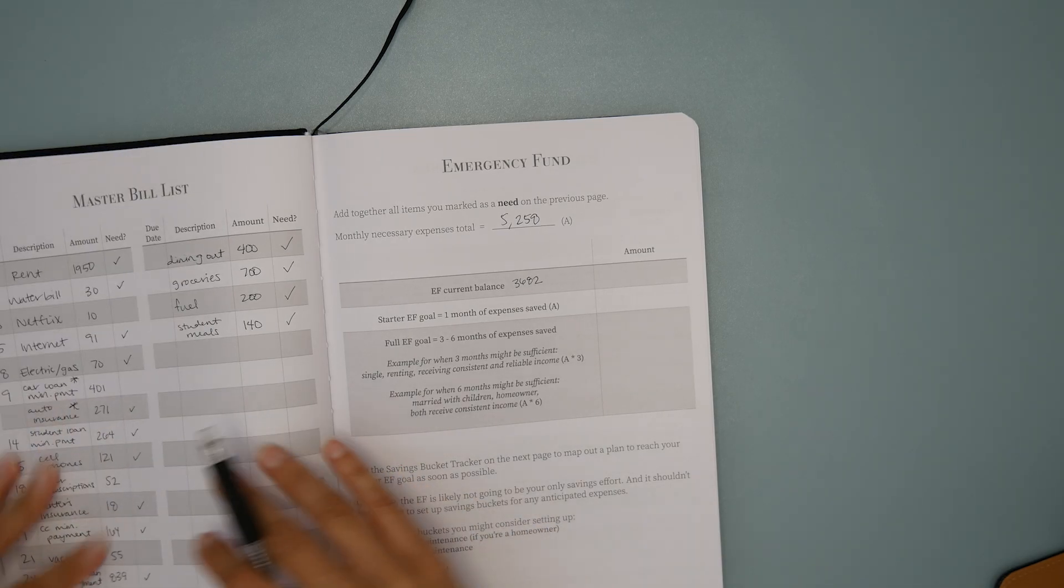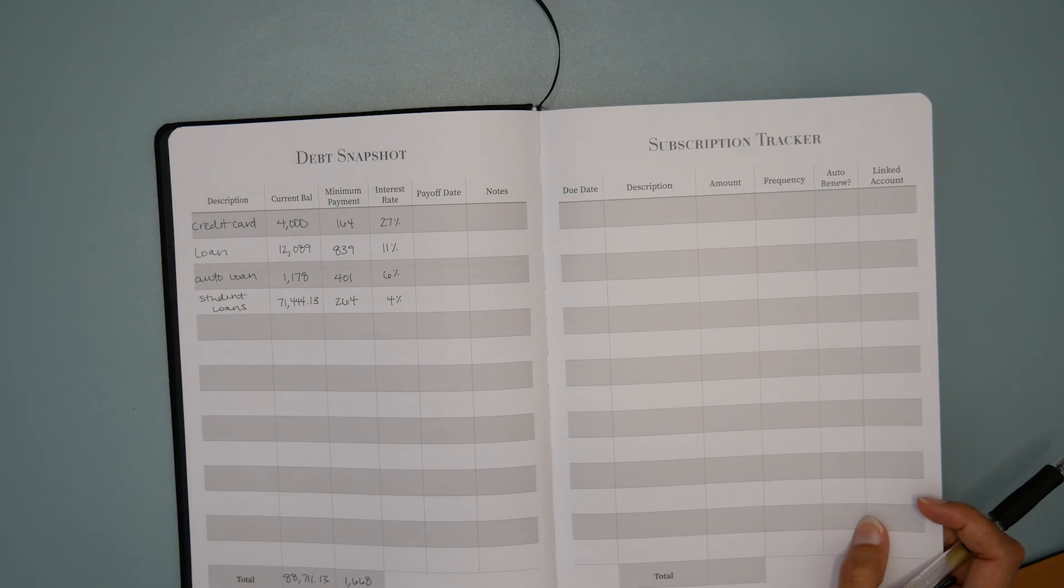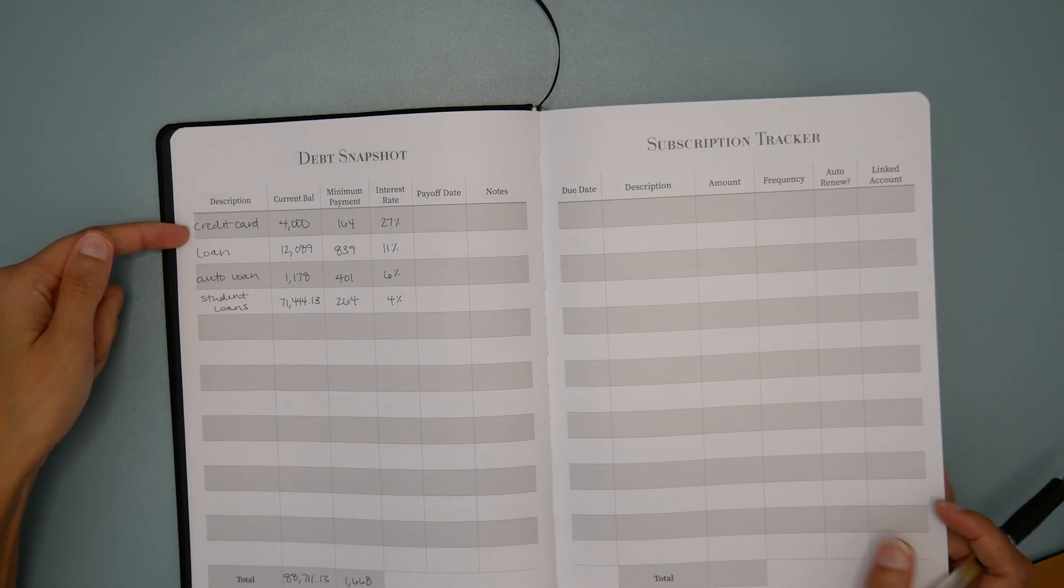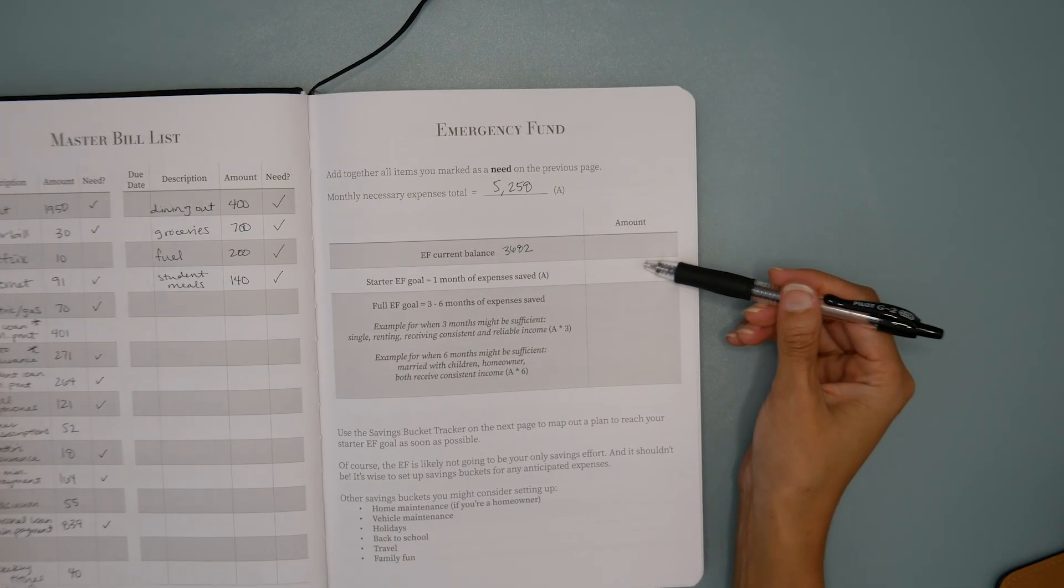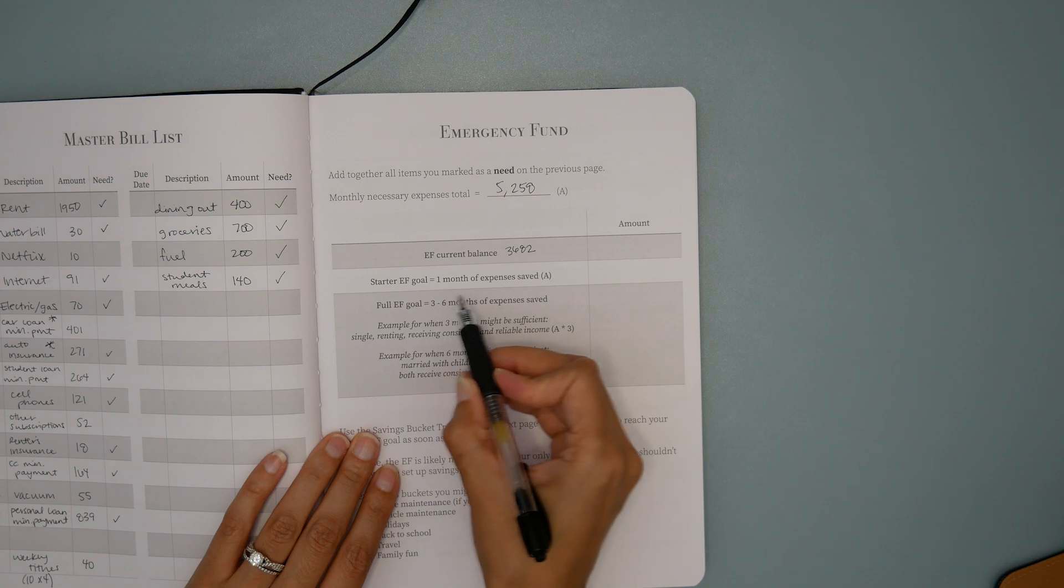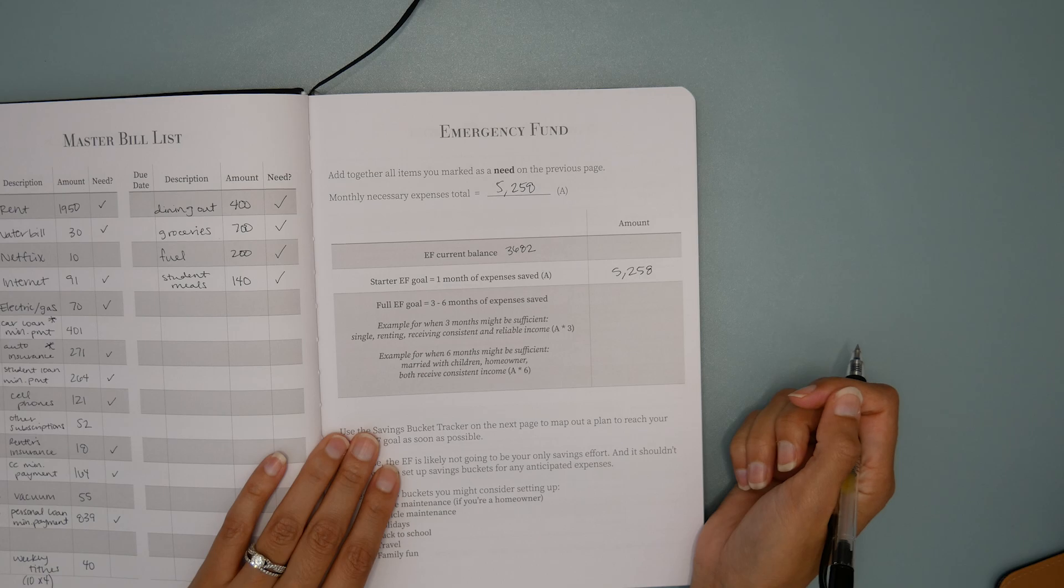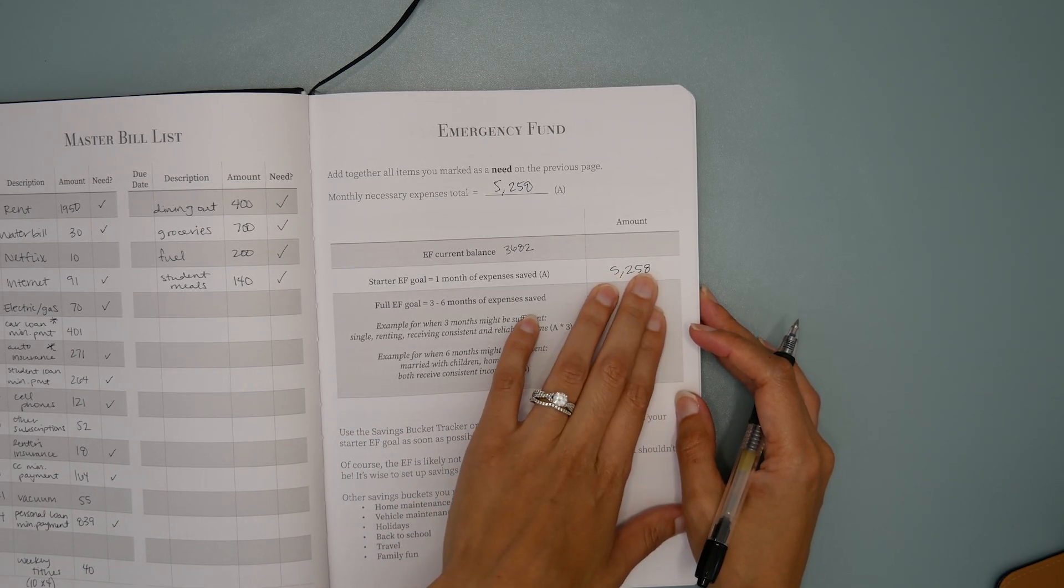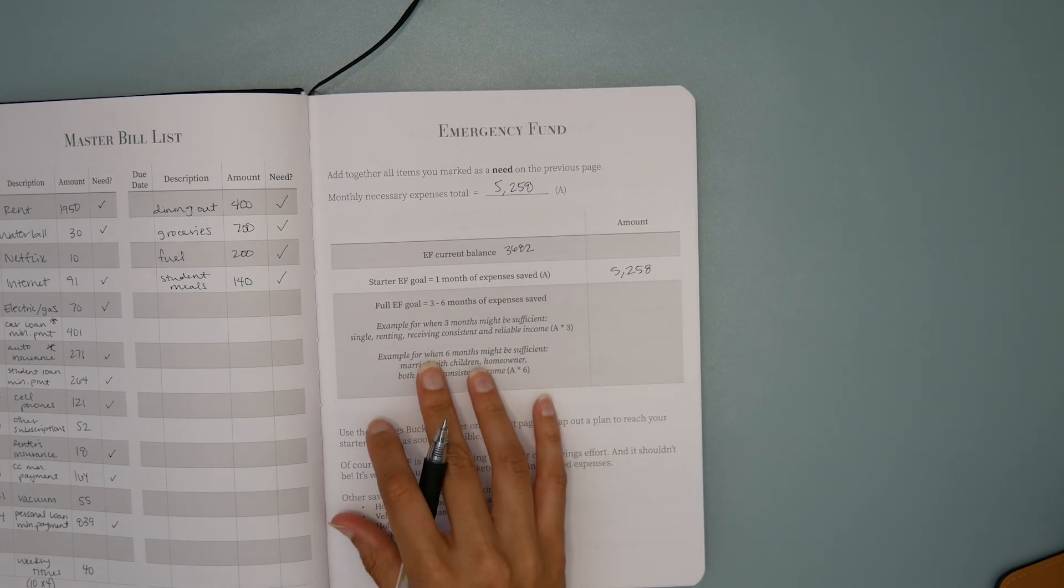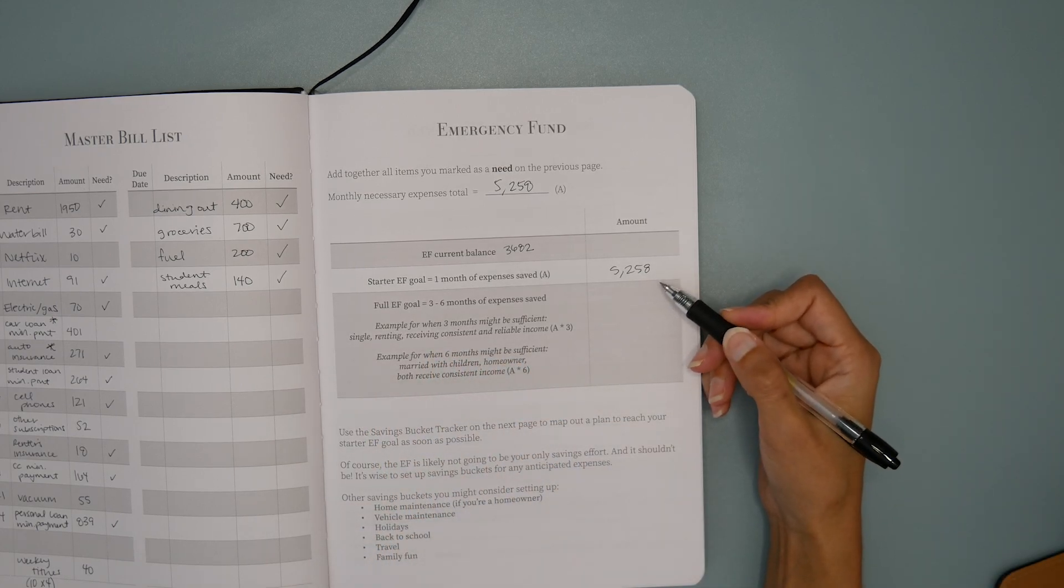My wheels are already turning, thinking about her debt snapshot, and how a plan that we at least want to consider is taking some of that savings and going ahead and paying it towards some of the high interest debt. So that's why I didn't just put it here and then move on. What we can go ahead and do though is list in here her starter goal, which would be one month of expenses saved.